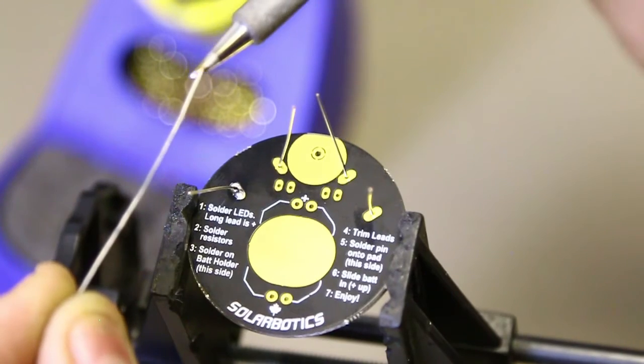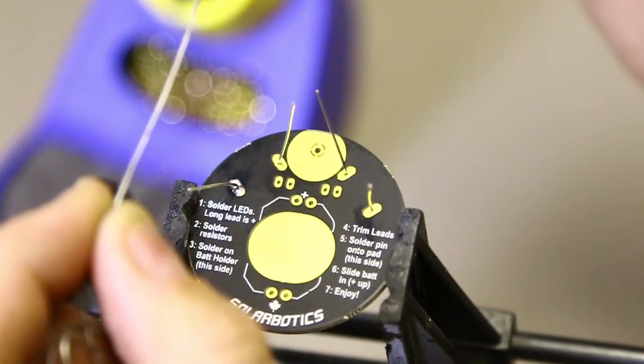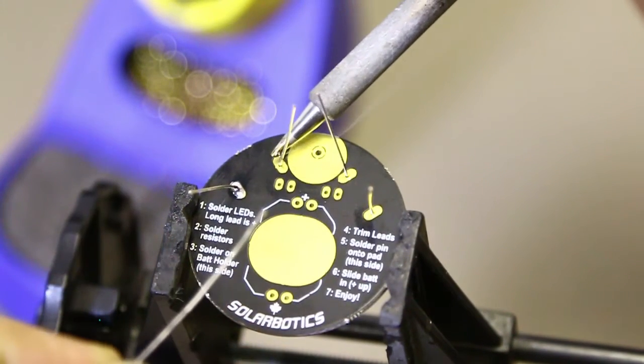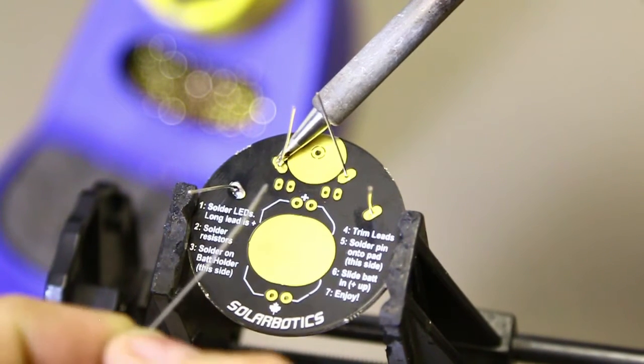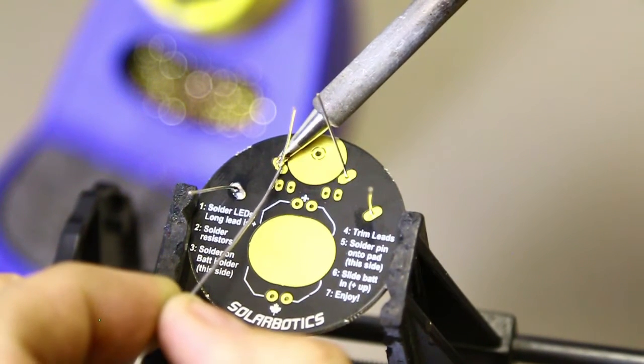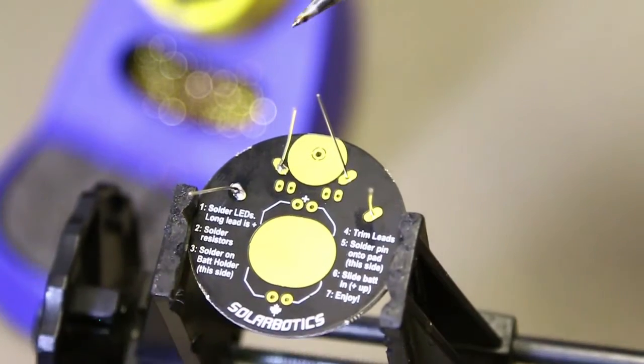We'll do that again. So you wet the tip, take that wet spot on the iron, apply it to both components on the opposite side of the iron, and a half a second later or so, you add a bit of solder to the pad to both components.